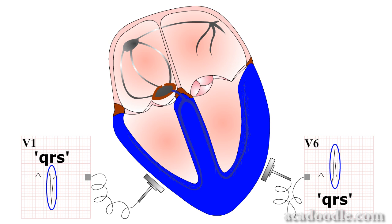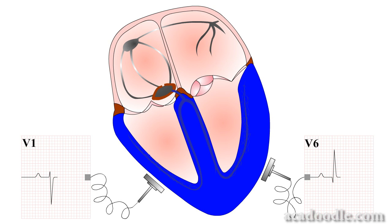We'll come back to the precise nomenclature of the QRS complex in a later video. When ventricular depolarisation is complete, there is a brief period when no current is flowing, and the recording returns to the isoelectric line. This period ends with the onset of ventricular repolarisation.